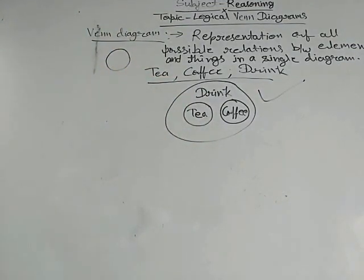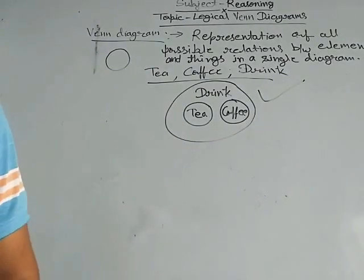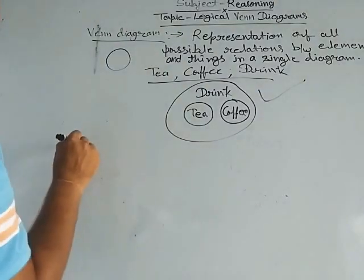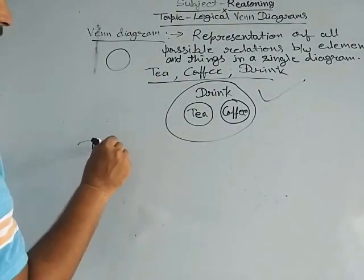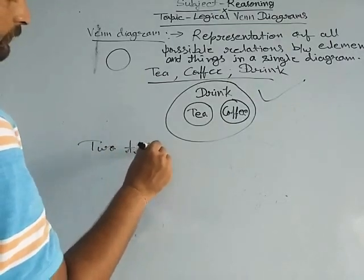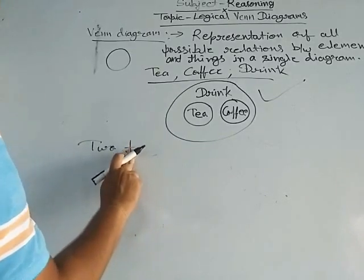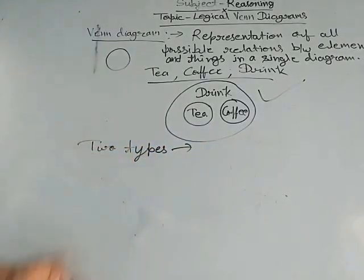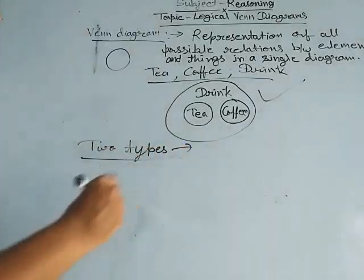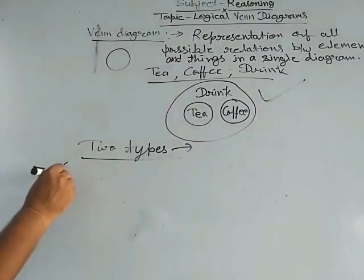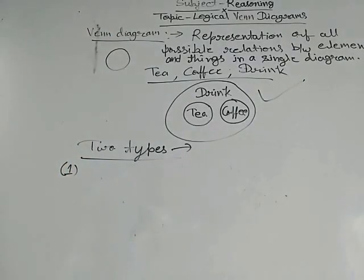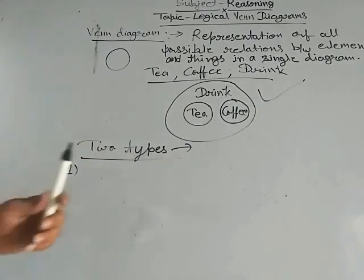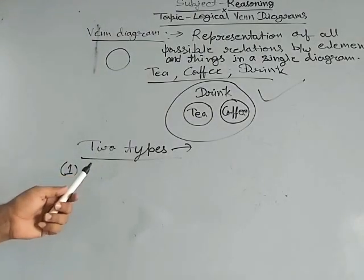Now, there are different methods and different rules for Venn diagrams. Let's start them. Two types of questions are asked in the examination based on Venn diagrams. The first type is: identification of relations based Venn diagram.